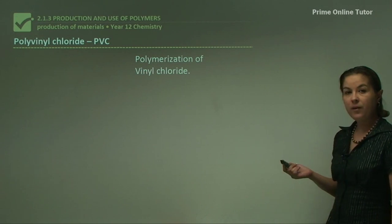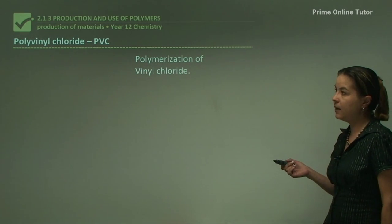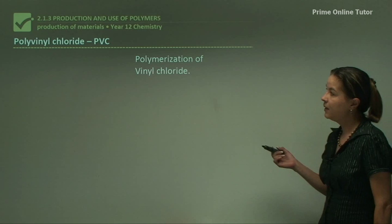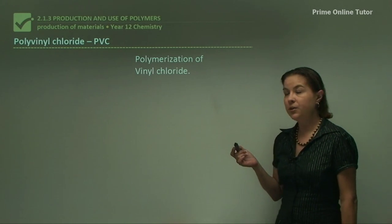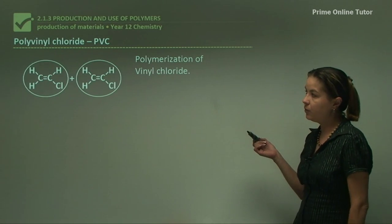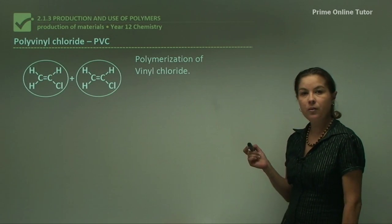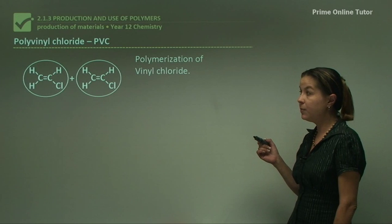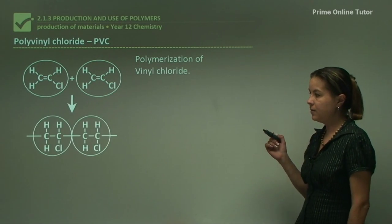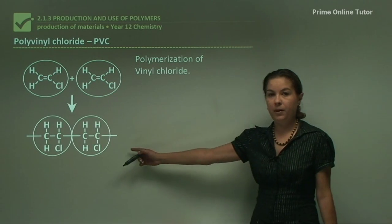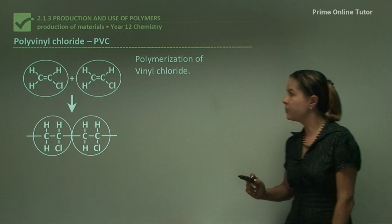PVC, the first polymer we'll look at today — polyvinyl chloride — we make it from the polymerisation of vinyl chloride. We have two vinyl chloride monomers that polymerise, and we get PVC with chloro groups.